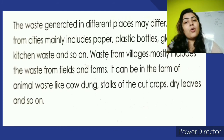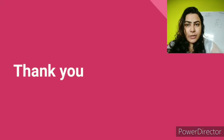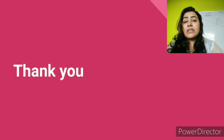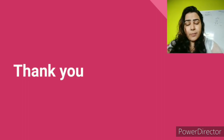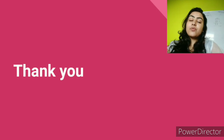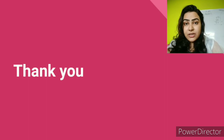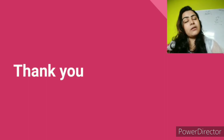Solid waste is again of two types: wet waste and dry waste. This much for today, children. I hope you all have understood very well. You are going to open the chapter, read the first two pages, find 10 important words, write them in your classwork copy, and send it to me in Google Classroom. Thank you children, keep learning, must read the chapter, and have a great day.